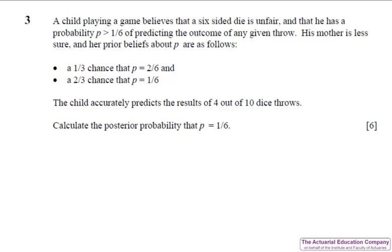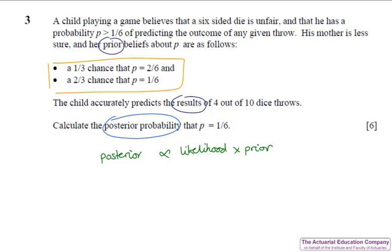Question 3 asks us to calculate a posterior probability given prior probabilities and some sample data. So clearly we're testing posterior distributions from chapter 2 of the notes. Usually we'd do this by using the fact that the posterior proportions for the likelihood times the prior. However in this case we have a discrete prior and so the proportional formula doesn't work well. Well what do we have to do? Well we go back to Bayes' theorem.